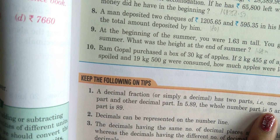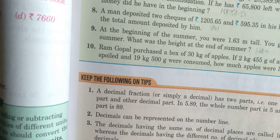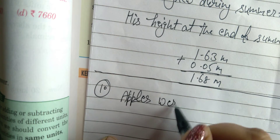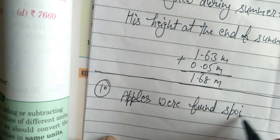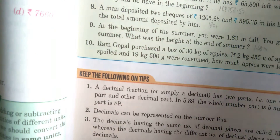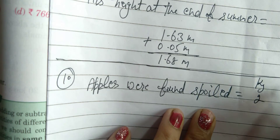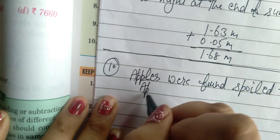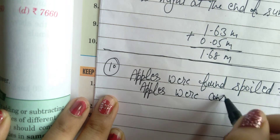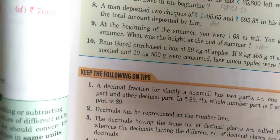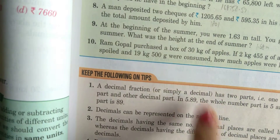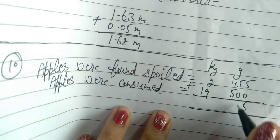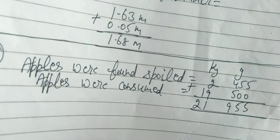Question number 10: Ramkopal Verma ने apples खरीदे। कुछ apples spoiled यानि खराब निकले — apples were found spoiled: 2 kilogram 4.55 gram। कुछ apple उसने use कर लिए — apples were consumed — consumed का मतलब है use करना। कितने apple उसने use किये: 19 kilogram 500 gram। यह उसने use कर लिए।